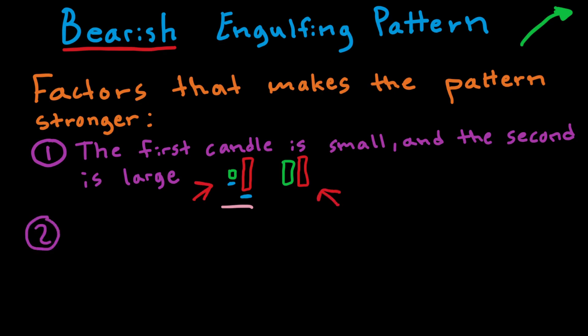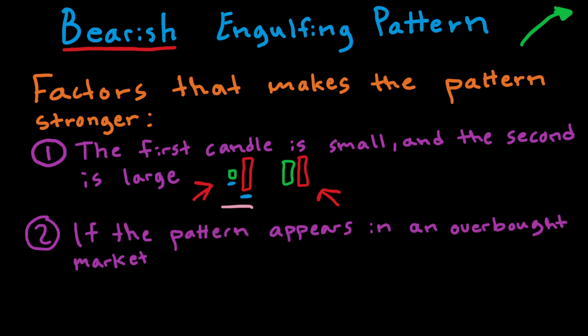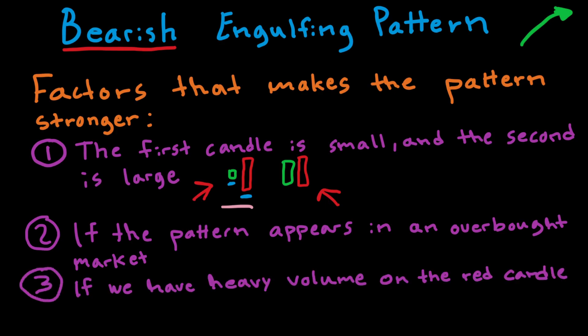Another factor that makes the pattern stronger is if it appears in an overbought market — when a market is overbought it often indicates a correction is on the horizon. A third factor is heavy volume on the red candle. The more volume on a candle, the stronger the force of the move, and much heavier volume on the red candle compared to the prior green candle indicates that the bears are taking control of the market.